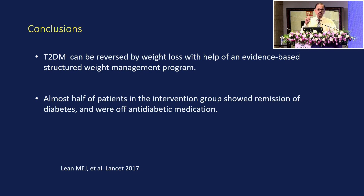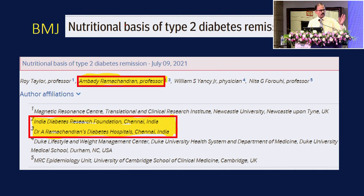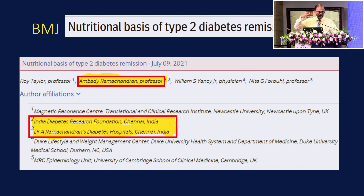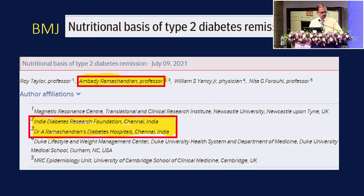Almost half of patients in the intervention group showed remission of diabetes and were off anti-diabetic medications. Following the DiRECT study, Roy Taylor reviewed the literature and the British Medical Journal wanted to publish a review on the nutritional basis of type 2 diabetes remission with international authorship. I was invited to be part of this review article, which was published in the British Medical Journal in 2021, looking at data from all over the world.